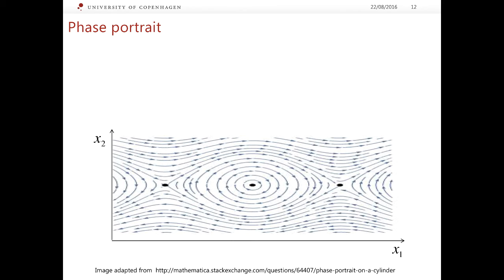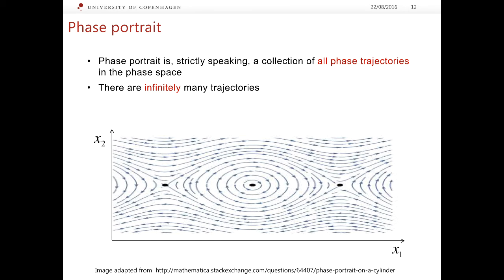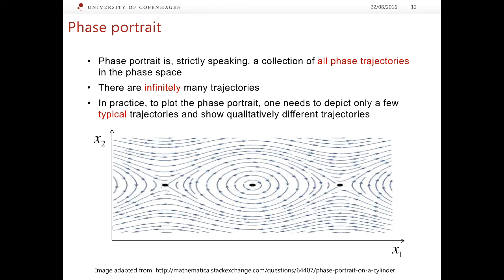Let us now introduce a very convenient concept of a phase portrait. Broadly speaking, the phase portrait is a collection of all phase trajectories in the phase space of the given dynamical system. However, there are infinitely many trajectories which can start from infinitely many initial conditions. We cannot depict infinitely many trajectories obviously, so in practice to plot the phase portrait we really need to depict only a few typical trajectories which are qualitatively different from each other. The figure on this slide shows a typical phase plot for a mechanical pendulum without friction.